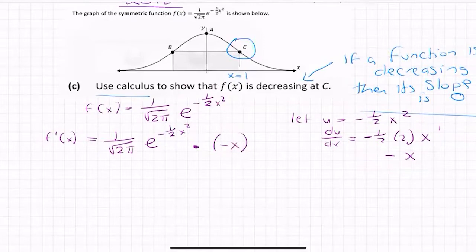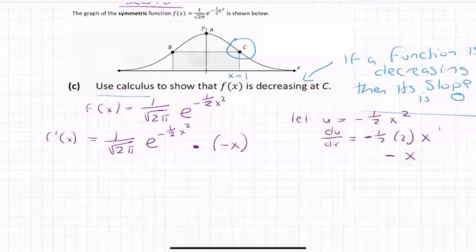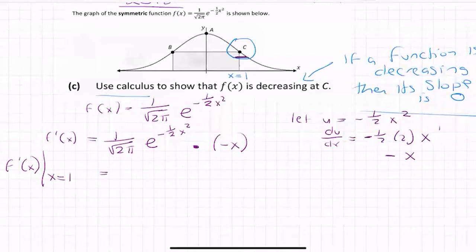So we could write it any way we want. We could go minus 1 over root 2π · x · e to the minus a half x squared, or we could leave it in the original form. I'll leave it like that for this one, because we have to substitute in anyway — x being equal to 1, because we need to find the slope at c. So therefore it's equal to 1 over root 2π · e to the minus a half of 1 squared, multiplied by minus 1.